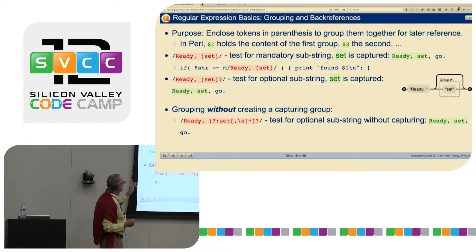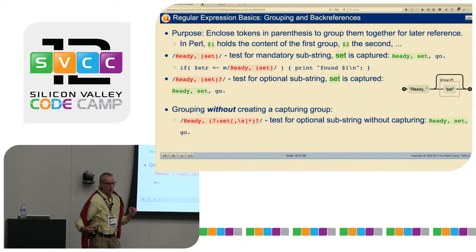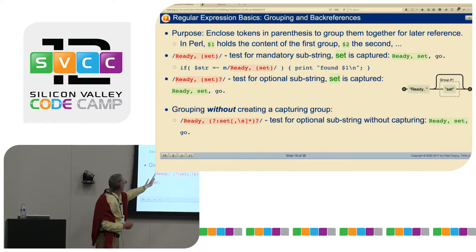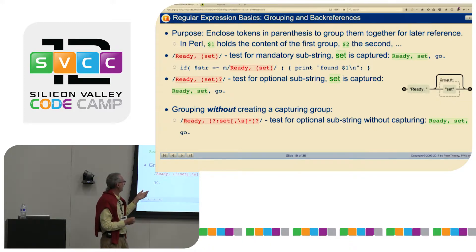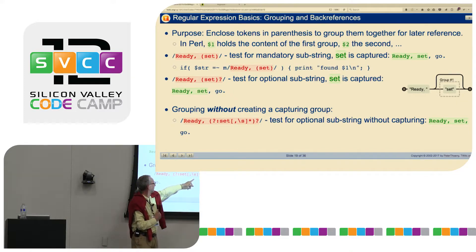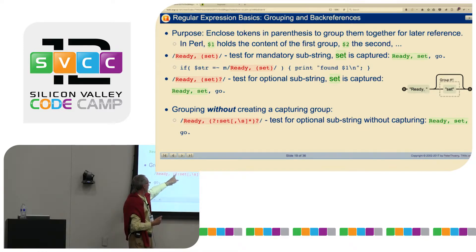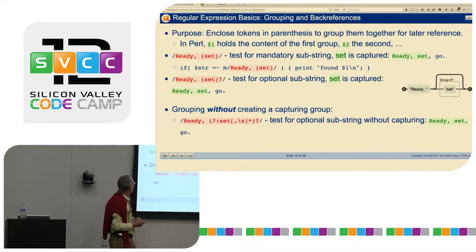If you do /ready, (set)?/ — the bracket followed by a question mark — the whole group is optional; it could be there or it doesn't have to be. There's also a way to make a group optional but not capture it for later use — you tell the regex engine not to capture by adding ?:, as in (?:set)?.